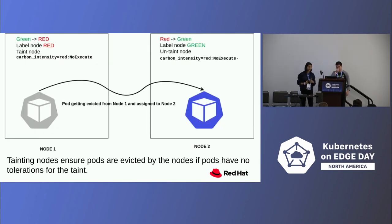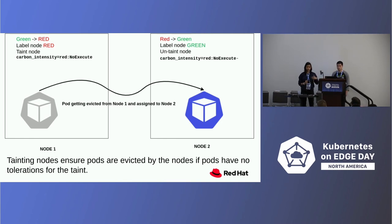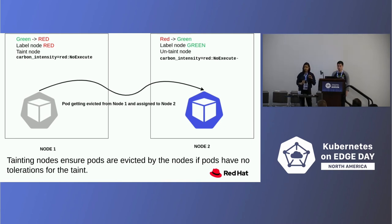When a node transitions from green to red, the node gets labeled red, tainted with carbon intensity red and NoExecute. The pod gets evicted from that node and assigned to another node transitioning from red to green, which gets labeled green and untainted. Tainting ensures pods are evicted from nodes if pods have no toleration for that taint, while labels ensure where the pod gets assigned. Tolerations ensure pods get evicted from a node if the carbon intensity is higher than the pod wants.